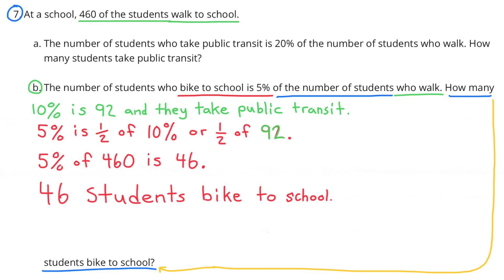B. The number of students who bike to school is 5% of the number of students who walk. How many students bike to school? 5% is exactly half of 10%, and 10% of 460 is 46. So 5% would be half of 46. 5% of 460 is 23. 23 students bike to school.